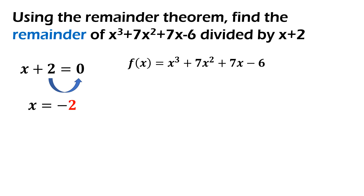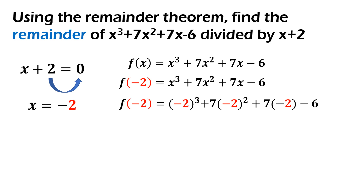f of x is equal to x cubed plus 7x squared plus 7x minus 6 — substitute yung value ng x. Lahat ng x dyan, palitan nyo ng negative 2. So next step is to evaluate — that's step 3. f of negative 2 is equal to negative 2 cubed plus 7 times negative 2 squared plus 7 times negative 2 minus 6.